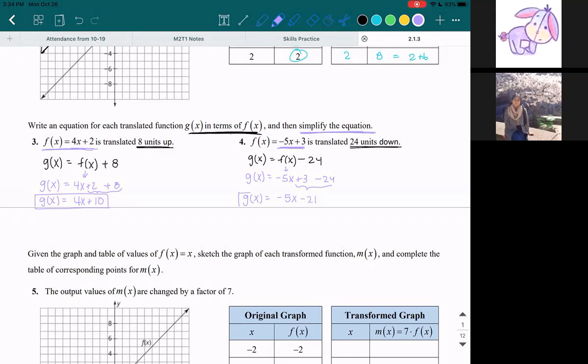So this would be our final answer, g(x) = -5x - 21.